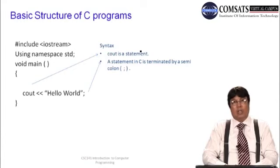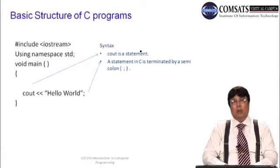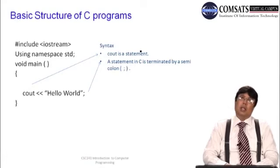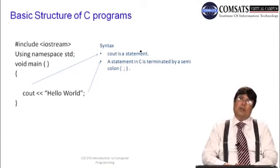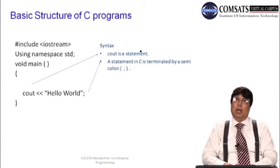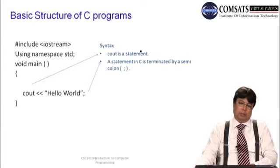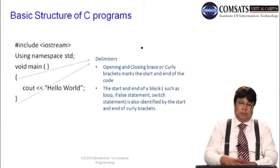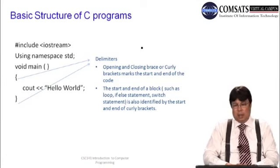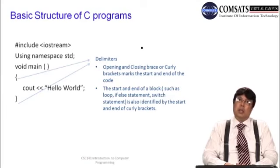Inside the program we have one statement: cout << "Hello World" terminated by a semicolon. Every statement in a C program must be terminated by a semicolon — that is mandatory. The curly braces, also called braces or delimiters, mark the start and end of a block of code. The opening curly bracket marks the start of the code and the closing curly bracket marks the end of the code.